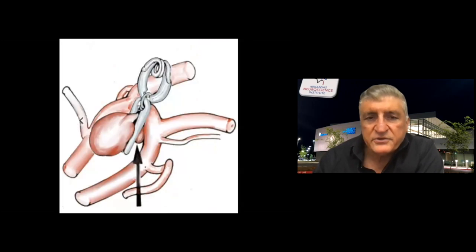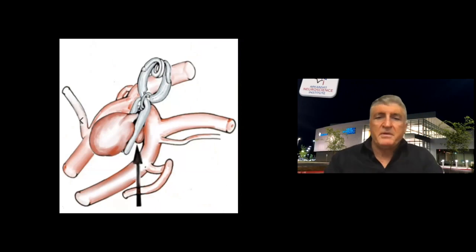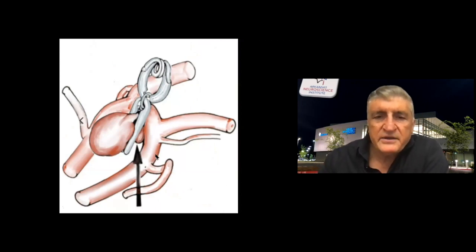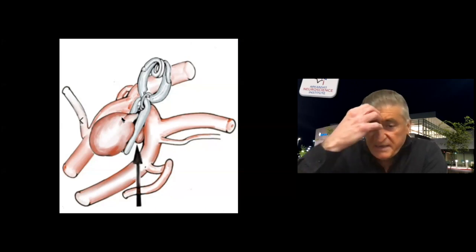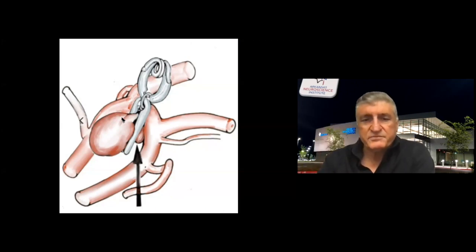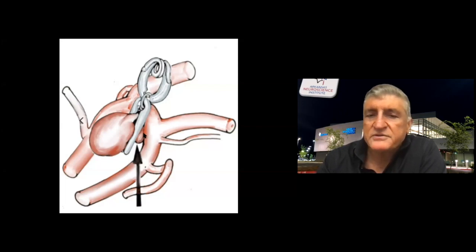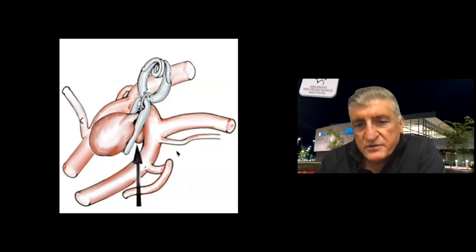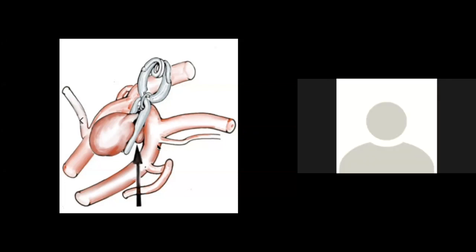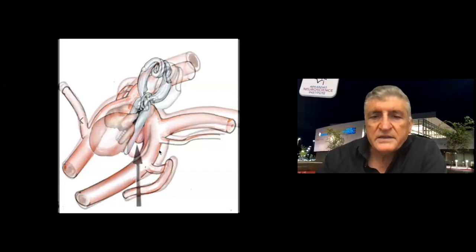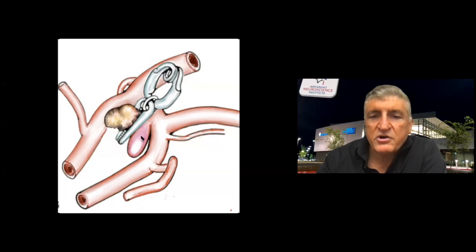An important point: just like with MCA aneurysms, the ACoM aneurysm base can be wide. A modified picture from Yasargil's book shows the 'underbelly' — the part hidden behind the A1-A2 junction. When approaching subfrontally, this hidden part can be missed, causing an incomplete clip. You must look from behind the A1-A2 junction. If you leave residual aneurysm, it can grow over time and bleed, becoming a problem later.